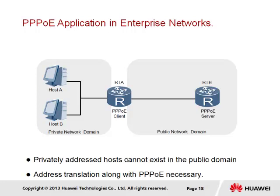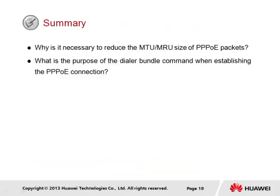How address translation is achieved is covered in the next section. This brings us to the section summary. The first question asks: why is it necessary to reduce the MTU/MRU size of PPPoE packets? The packet size is generally 1500 bytes, the maximum supported size before fragmentation occurs. When PPPoE is implemented, the packet size increases by an additional 8 bytes, making it necessary to reduce the MRU size received from the peer to 1492 bytes, negotiated during the LCP process.